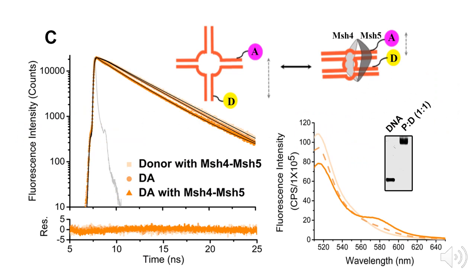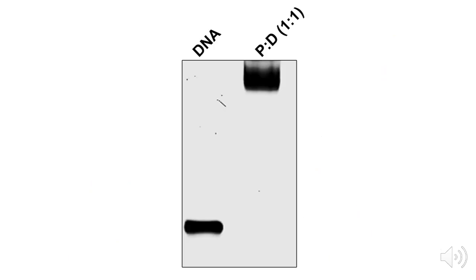We use an electrophoretic mobility shift assay to assess the integrity of the samples after measurement. In these gels, the free DNA runs faster than the protein bound DNA, and under our conditions we have a stable, fully bound complex at a 1 to 1 ratio.